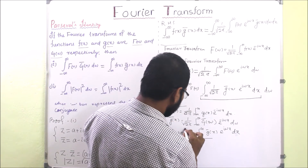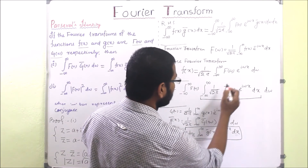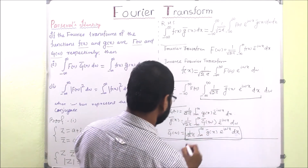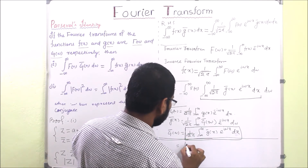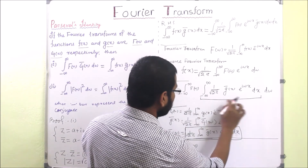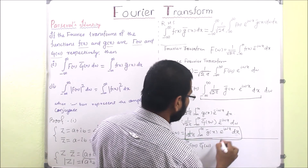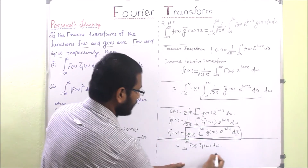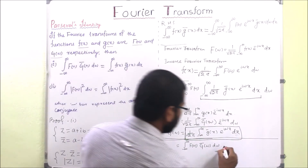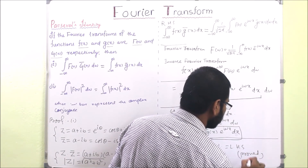Substituting that formula, the inner integral simply becomes capital G-bar(w). So the full expression reduces to the integration from minus infinity to infinity of F(w) times G-bar(w) dw, which is exactly the LHS. Therefore the first property is proved.